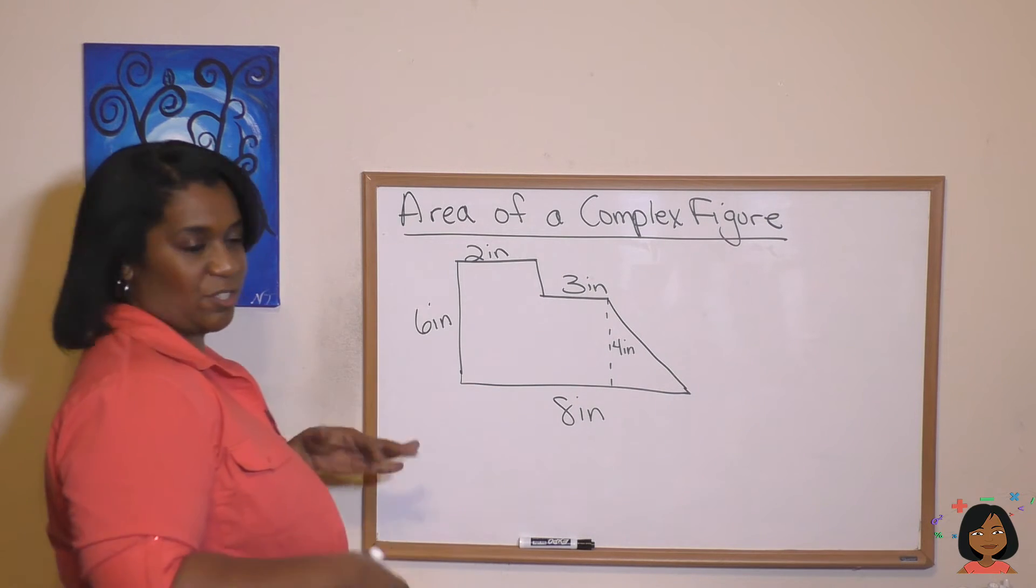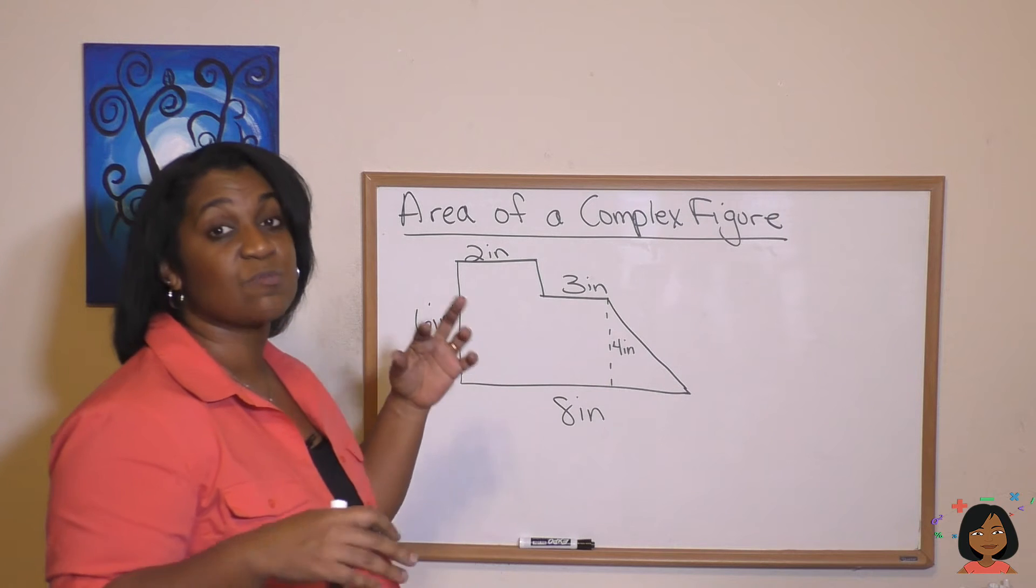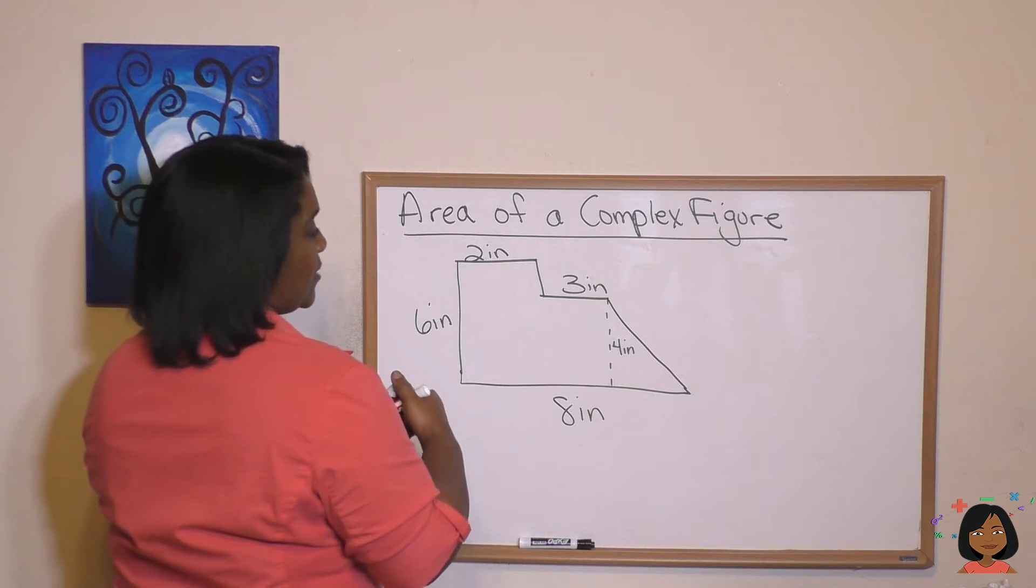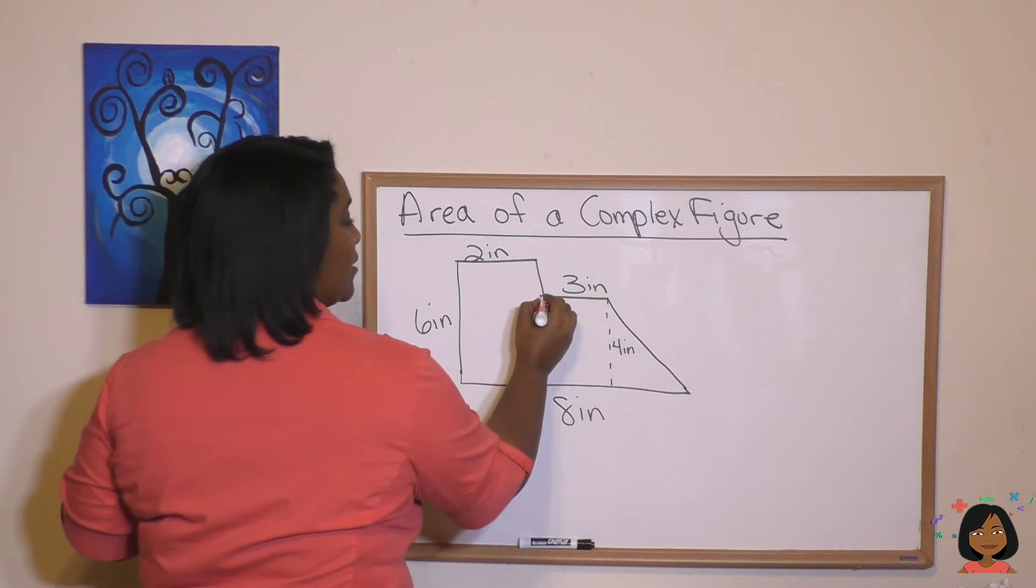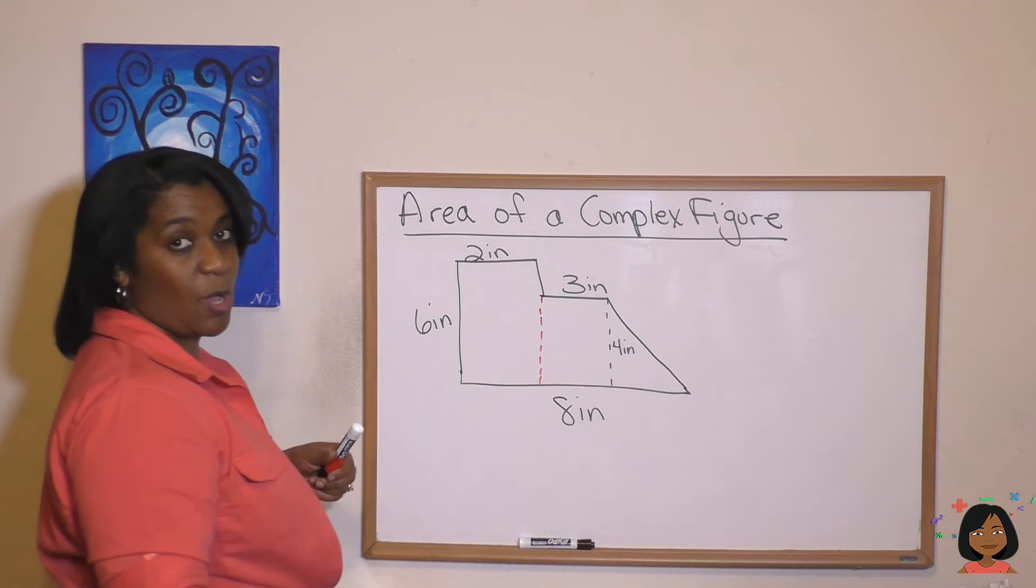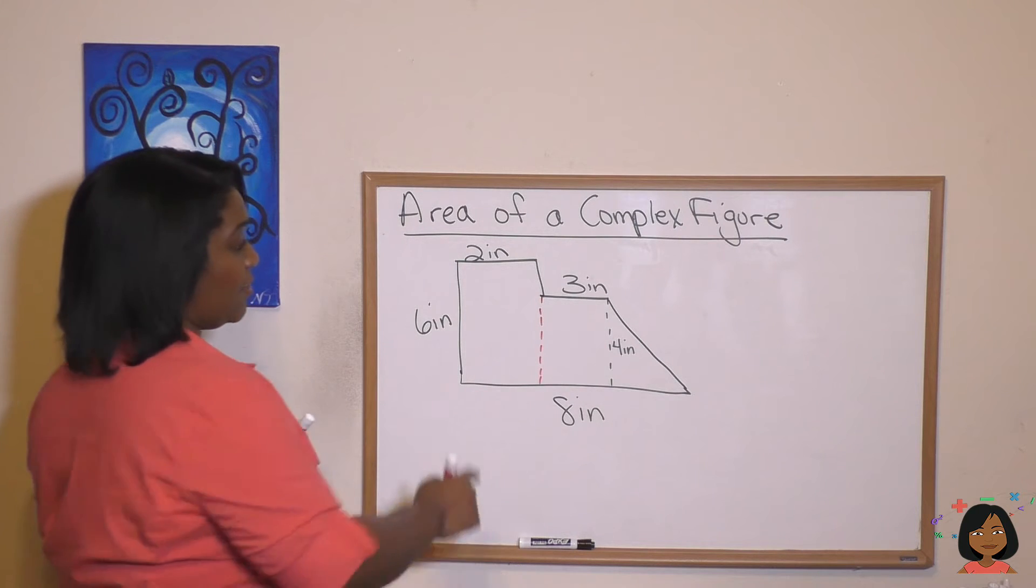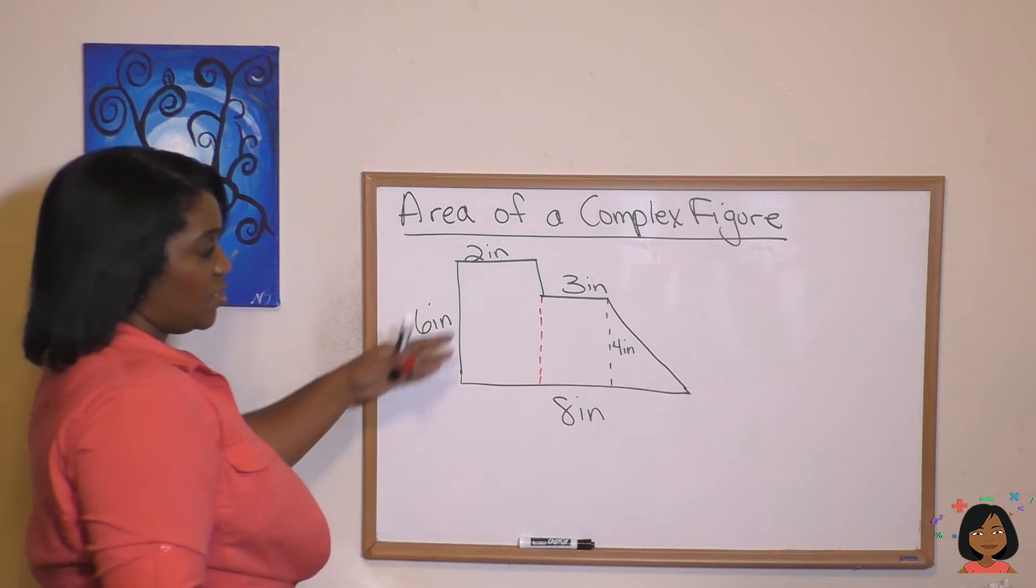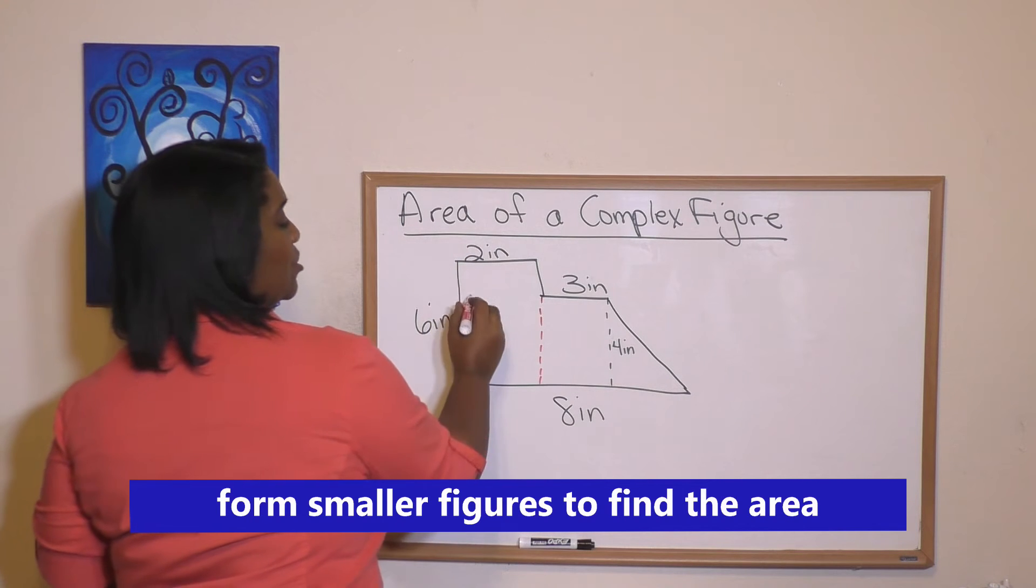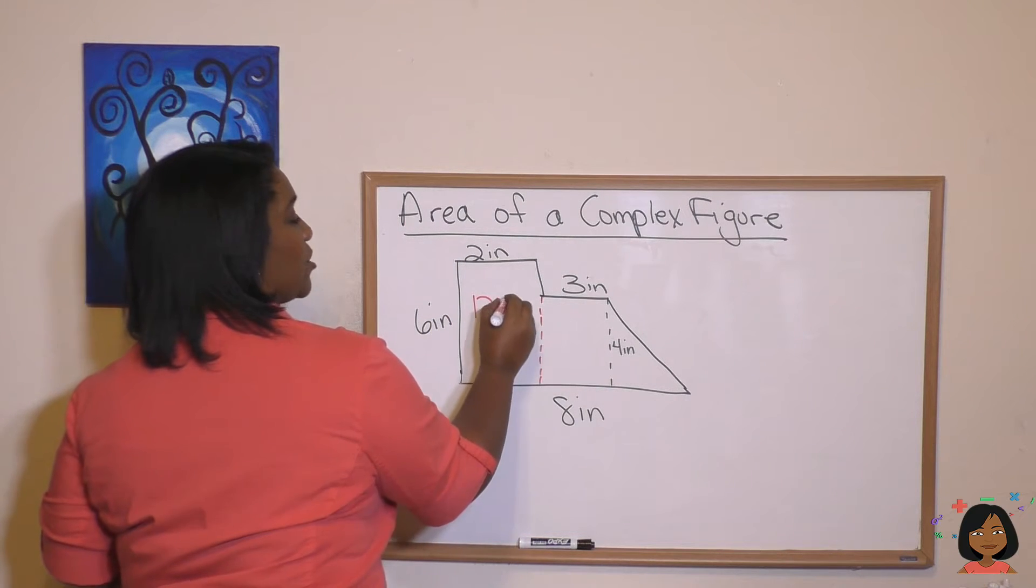So in this figure, it's a complex figure. I see some smaller figures in it. Notice, I see this is a rectangle right here, right? And we know that the area of a rectangle is length times width. So we can find the area of this first rectangle. Six times two is 12 inches squared.